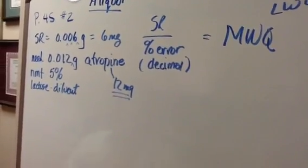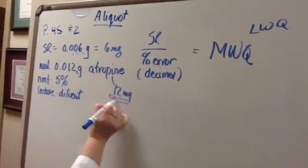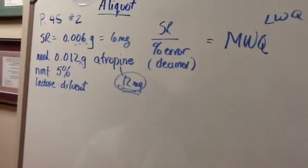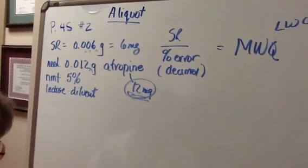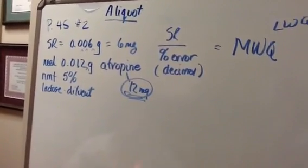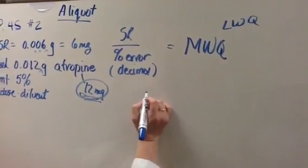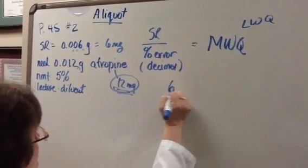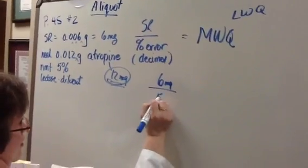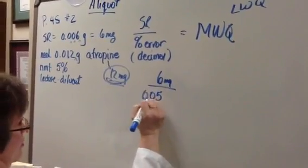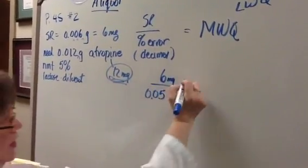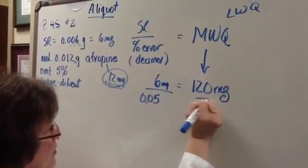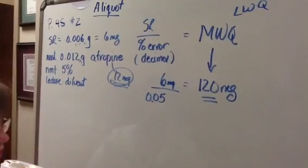So you all should remember that you can't weigh 12 milligrams on your scale. So this is why we've got to take the time to make an aliquot. So I figure out my minimum weighable amount, the MWQ. I take my sensitivity requirements, which is 6 milligrams, over the percent error written as a decimal, 0.05. And I find out that my MWQ is 120 milligrams. I cannot weigh less than 120 milligrams.